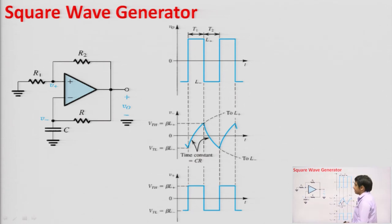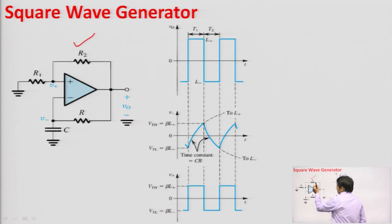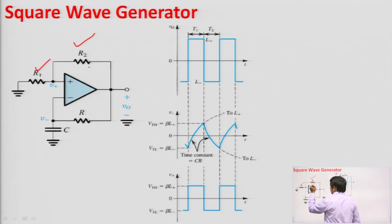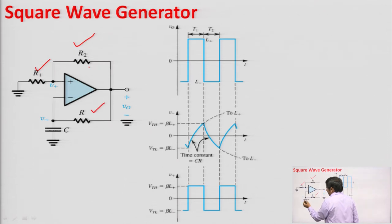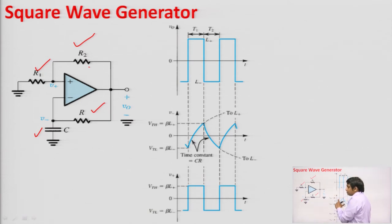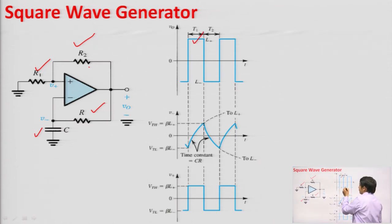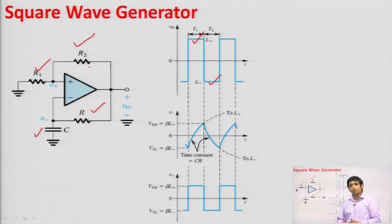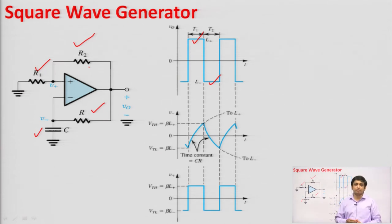Now, coming to the square wave generator. We can see that in the left-hand side circuit, R2 and R1 — the output is connected to the positive input terminal through R2 and R1 resistors which form a voltage divider. And further, one more resistor R and capacitor C is connected between the inverting input and the output. So there is a positive feedback, and we need to understand how this square wave is generated. In a square wave we know there are two levels — one is positive, another one is negative — meaning the output of the circuit should go either to the positive side or the negative side, having only two values at the output.